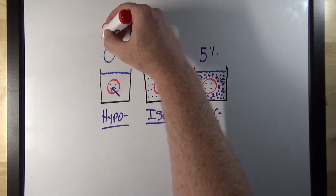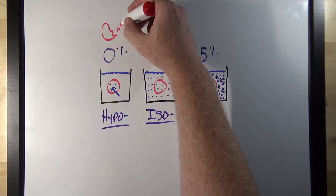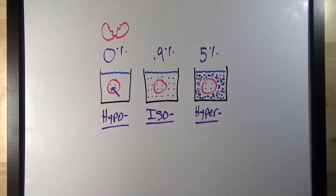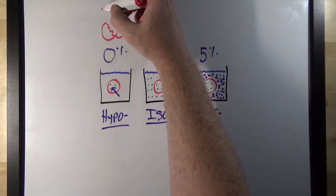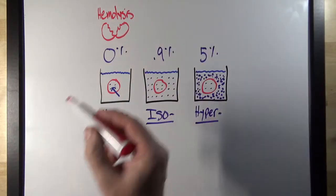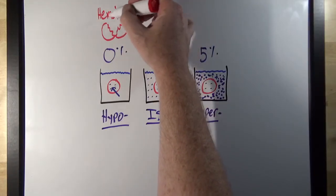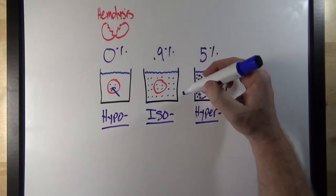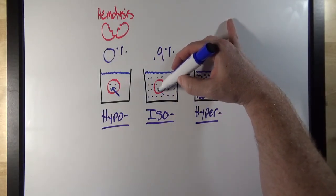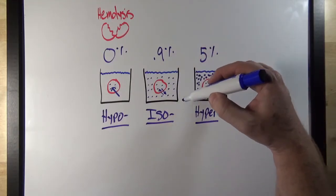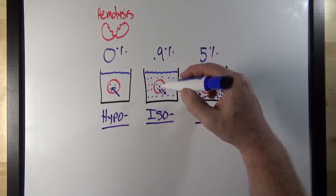I'll represent the burst cell like so — the poor red blood cell exploded and released its contents. That red blood cell is not going to work anymore. This is an example of hemolysis — the splitting of the red blood cell. In the isotonic case, equal amounts of water will move into the cell as will out of the cell, so we're not going to get a net movement of water here.